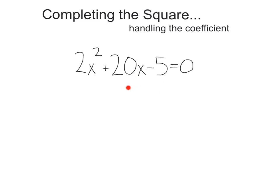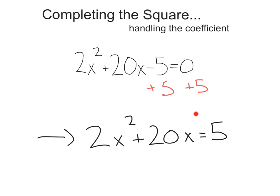We're going to start things off just like normal, adding 5 to each side. We're going to get 2x squared plus 20x equals 5.